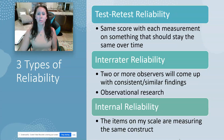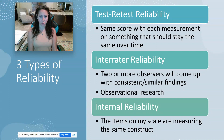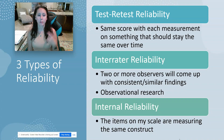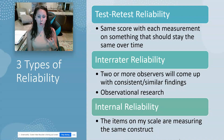There are three main types of reliability that we discuss in relationship to research methods: test-retest reliability, inter-rater reliability, and internal reliability.